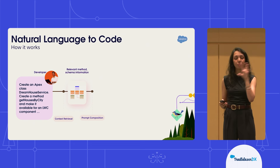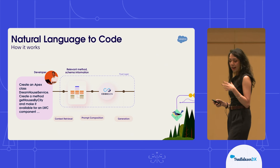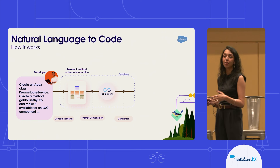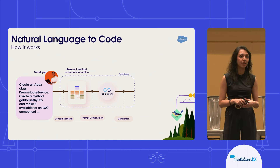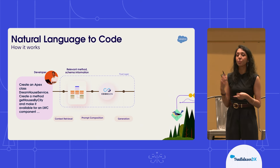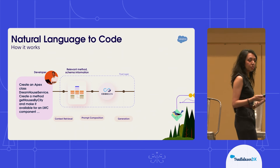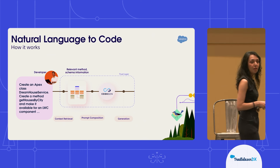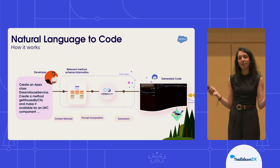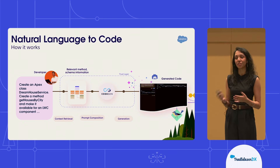Once we have that entirely bundled prompt, we send it to CodeGen, our LLM. Any time we send data to CodeGen, before it's presented back to the user, we're also sending it through our trust layer. This ensures that we're filtering any output for toxic content, we're removing any PII or secrets, and overall ensuring that the code that you're submitting to us and the code that is coming out in response is actually safe and approved by Salesforce. Once we've gone through that entire pipeline, that code is then presented to the user within your IDE itself.